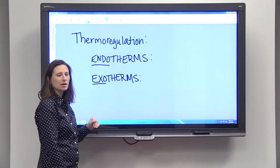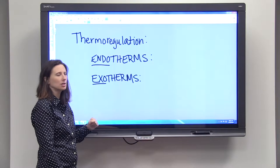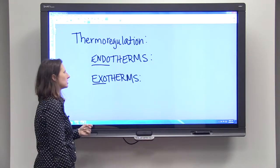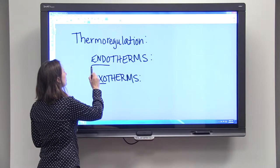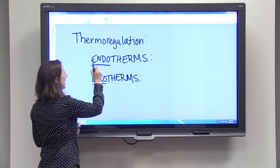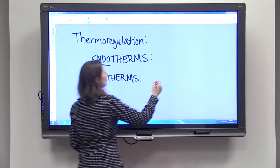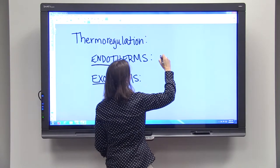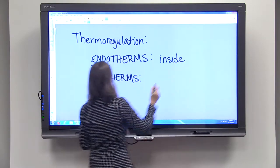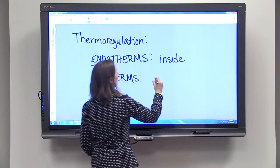There are two types of animals when it comes to temperature regulation: endotherms and exotherms. You can tell a little bit about them by looking at the words themselves. Endo is a prefix that means inside, and exo is a prefix that means outside.